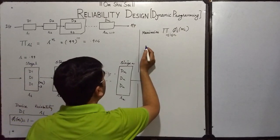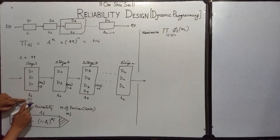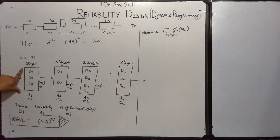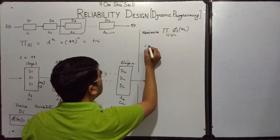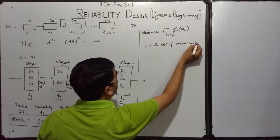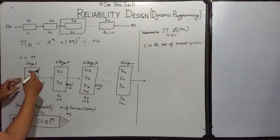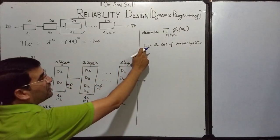Now, what is the condition or limitation? Each device DI has a cost CI. For example, the cost of D1 is C1, D2 is C2, and so on. There is a constraint where we have to maintain the overall cost of the system within limits — we have to design a system that does not exceed a specific cost C. We have to use multiple devices at each stage, but the overall cost must not exceed this limiting cost C.